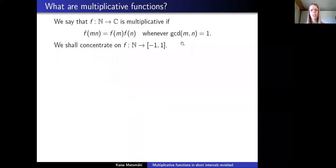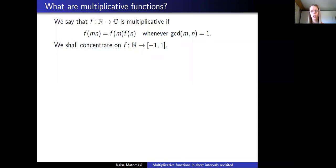We say that f is multiplicative if f(mn) is always f(m) times f(n) when the greatest common divisor of m and n is one. In this talk I will concentrate on multiplicative functions taking values in {-1, +1}, so they are bounded and real-valued for purposes of this talk.